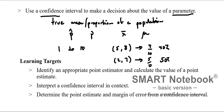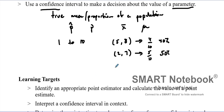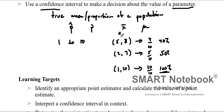If you want to be 100% confident, you take the interval from 1 to 10. That covers all possibilities — 10 out of 10 — so you're 100% confident the number falls in there. The larger the interval, the more confidence you have. A single number gives only 10% confidence; the full range gives 100%.